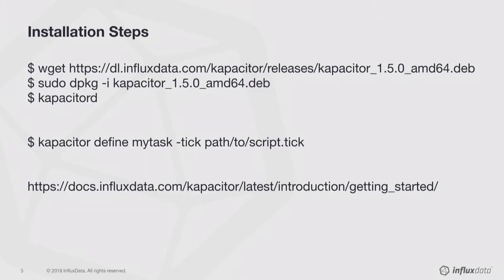I'll walk you through the steps of installation quickly — not expecting you to do this right now, just showing you it's quick and easy to get up and running with Capacitor, just like the rest of the TICK stack. Download the appropriate binary for your distribution — here Ubuntu as an example — and simply run the Capacitor daemon. If you install the packages, we include the systemd service unit scripts so you can manage it through systemd. An example of spinning up a task: Capacitor runs tasks, essentially a query running in the background that you can turn on and off. You'd say 'capacitor define my-task' and give it a path to a TickScript.